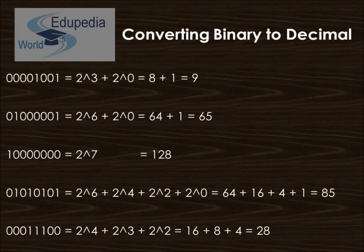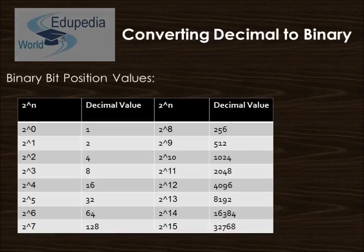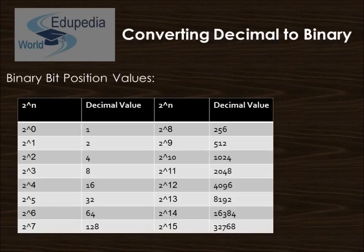To summarize binary-to-decimal conversion: each binary bit position is a power of 2, so to calculate the decimal value just add the value of each bit position containing a 1. Now let's look at the reverse conversion — converting a decimal number to binary. We need to deconstruct the decimal number into powers of 2, using only powers of 2 that do not exceed the desired number.